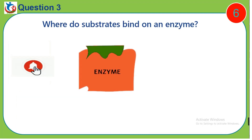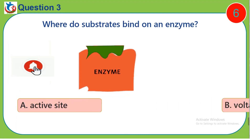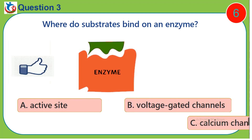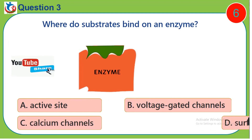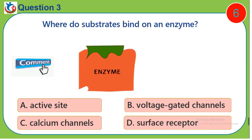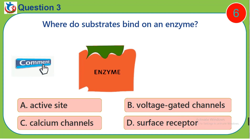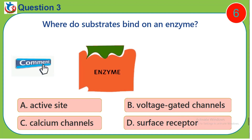Question 3. Where do substrates bind on an enzyme? A. Active site. B. Voltage gated channels. C. Calcium channels. D. Surface receptor.